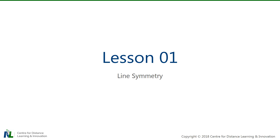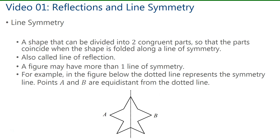Welcome to lesson one on line symmetry. Line symmetry exists when a shape can be divided into two congruent parts so that the parts coincide when the shape is folded along the line of symmetry. This is also called a line of reflection. A figure can have more than one line of symmetry — you can have vertical, horizontal, and oblique lines of symmetry.